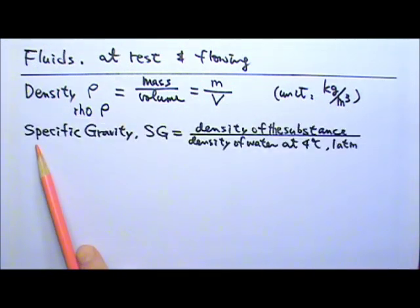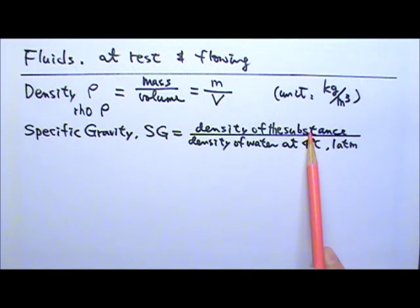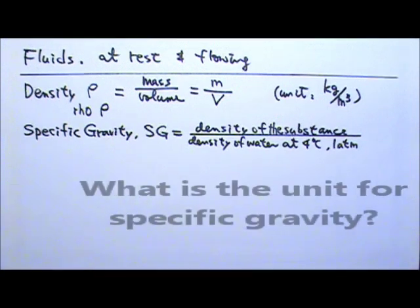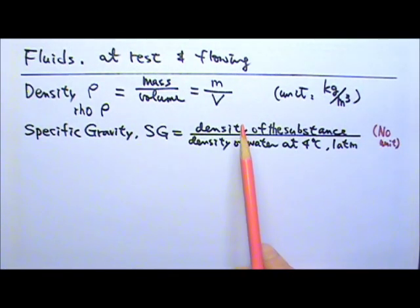Another term that is very similar to density is the specific gravity, SG. The specific gravity of a substance is the density of the substance divided by the density of water at 4 degrees Celsius and under 1 atmosphere of pressure. What do you think is the unit for specific gravity? There is no unit. It is density divided by density. So the units of density cancel. Specific gravity is just a ratio of the two densities. A specific gravity of 7 means the substance is 7 times as dense as water at 4 degrees Celsius.